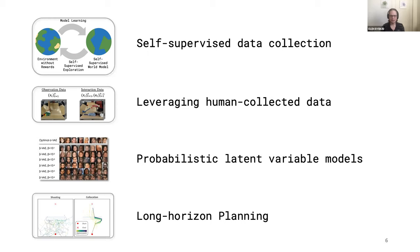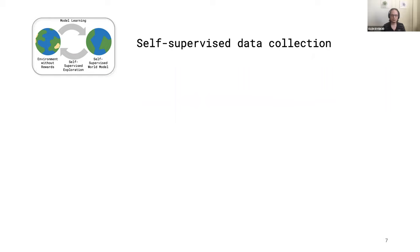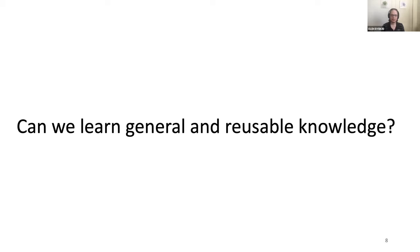Specifically, I'm going to talk about four directions: how we can collect data that's not specific to a particular task via self-supervision; how we might leverage large-scale sources of human-collected data; how to improve current probabilistic latent variable models; and how to scale planning to longer horizons. The main question of this talk is whether we can design agents that learn general and reusable knowledge, and whether we can do this with model-based agents.